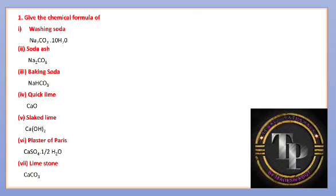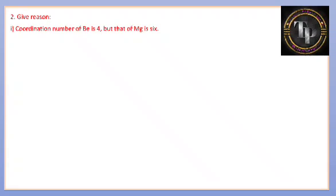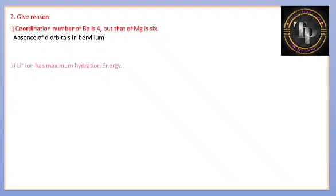Give a reason: the coordination number of beryllium is 4 but that of magnesium is 6. The reason is the absence of d-orbitals in beryllium. There are no d-orbitals in beryllium, therefore the coordination number of beryllium is 4 and magnesium is 6.